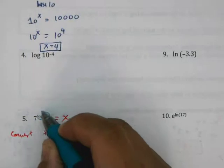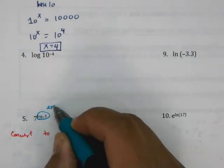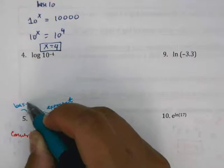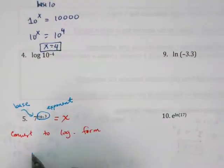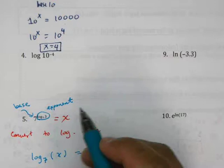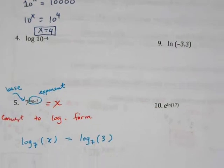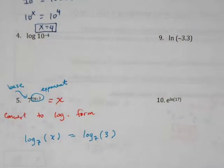Keep in mind that in this particular example, this entire expression here is the exponent, and the 7 is the base. So we know then that log base 7 of x equals the exponent, which is log base 7 of 3.